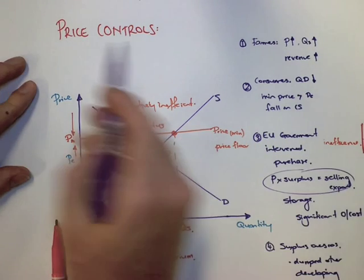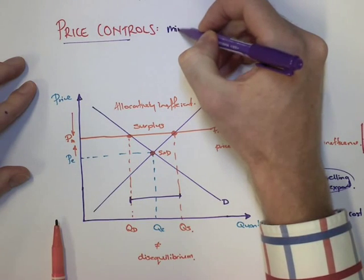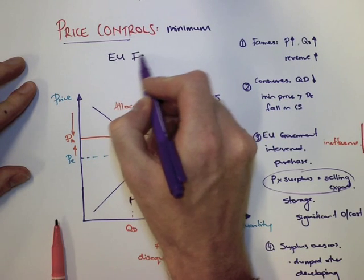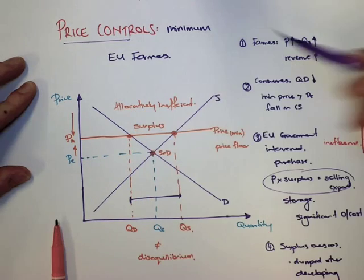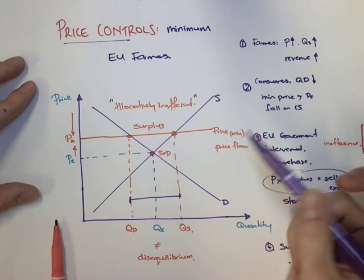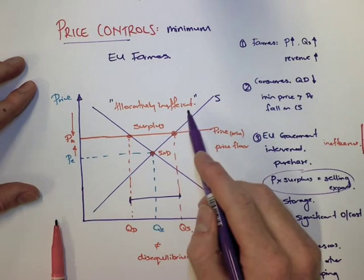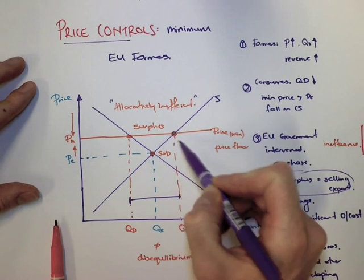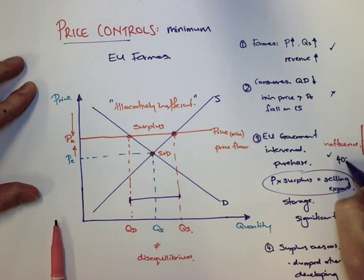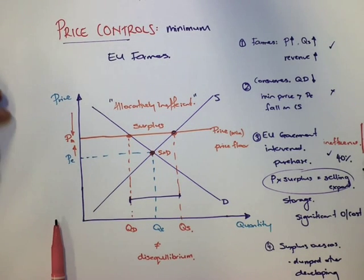Overall, this is an example of what we call minimum price controls, and EU farmers was our case study. You can see for several reasons that it's highly inefficient, and this is the big phrase in this tutorial: allocatively inefficient. The market's not producing at a point where supply equals demand. We have farmers that are benefiting, consumers that are hurting, and government which has to pay for this kind of stuff. That links back to the article we talked about before and how the EU spends up to 40% of their income on subsidizing farmers.